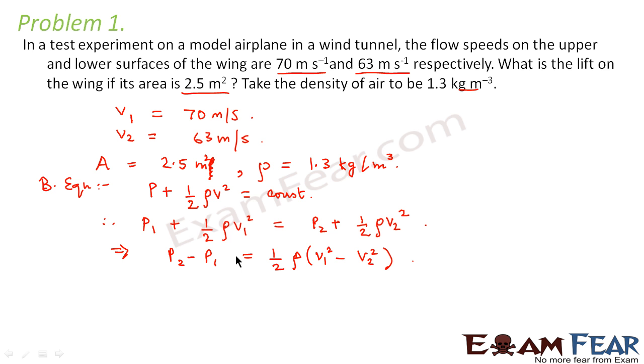So from this we can say p2 minus p1 is equal to half rho v1 square minus v2 square. So this is the pressure difference between the upper and lower surfaces and this pressure difference gives rise to the dynamic lift.